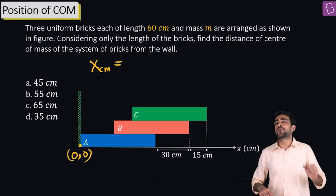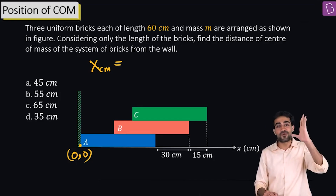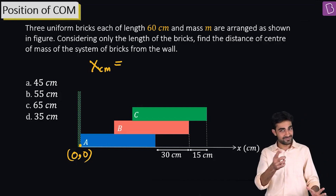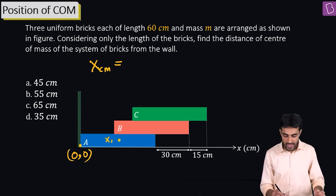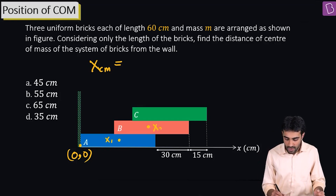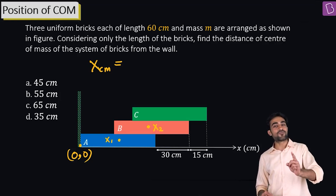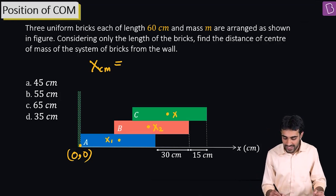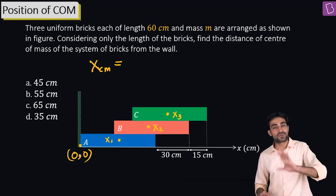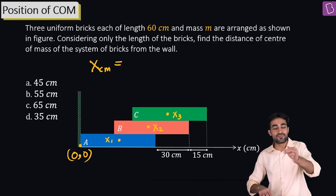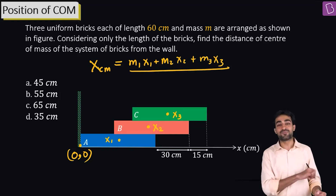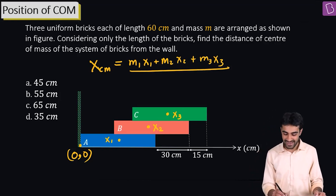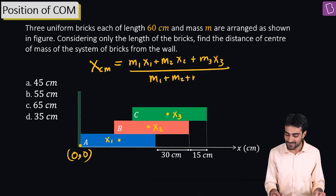Let me tell you the formula we will be using. To calculate x_cm, you must know x1 — the coordinate of the center of mass of the first rod — x2, the coordinate of the center of mass of the second rod, and x3, the coordinate of the center of mass of the third rod. Using these three coordinates, x_cm = (m1·x1 + m2·x2 + m3·x3) divided by the total mass m1 + m2 + m3.